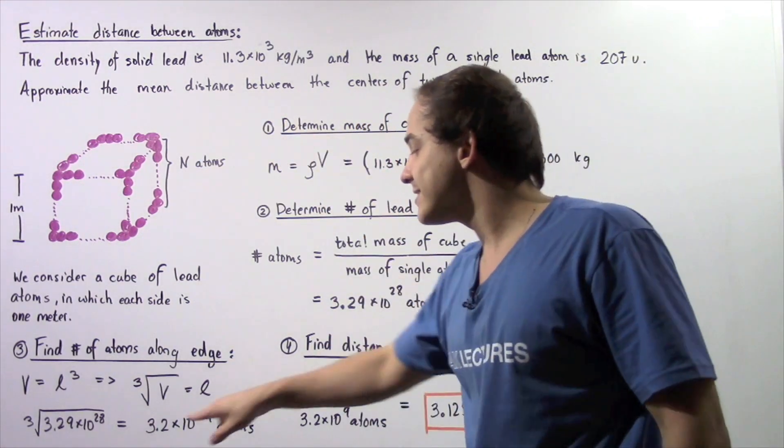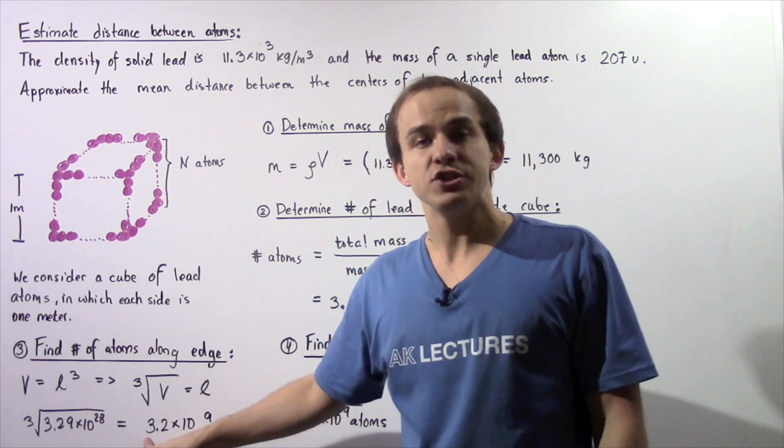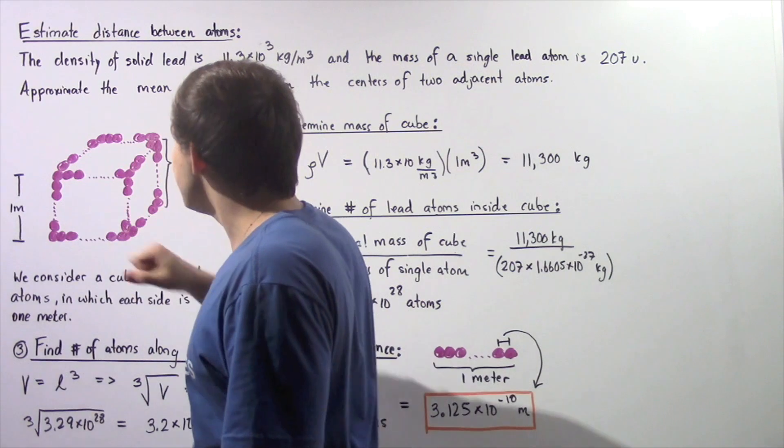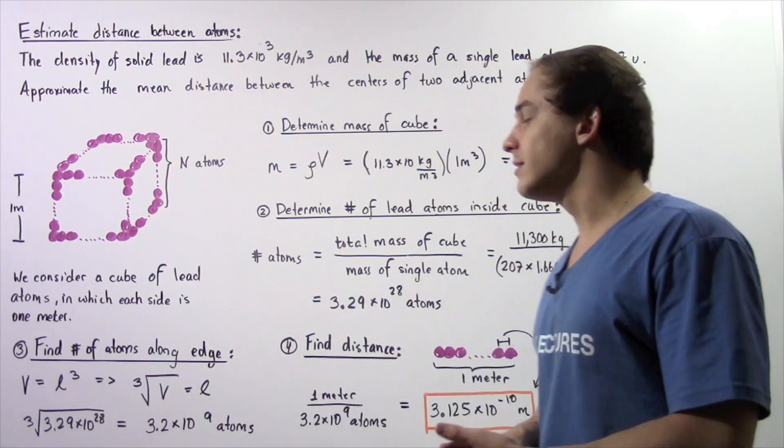And we find that each edge has a number of 3.2 times 10 to the 9 atoms. So each one of these edges has this many lead atoms.